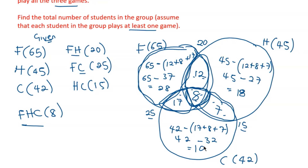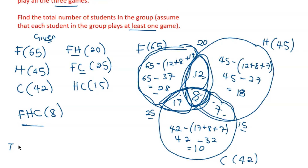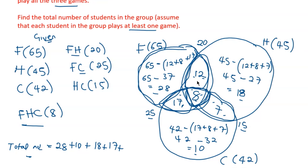The question asks for the total number of students playing at least one game, so we add all the regions together: football only (28), cricket only (10), hockey only (18), football and cricket only (17), football and hockey only (12), all three games (8), and hockey and cricket only (7).